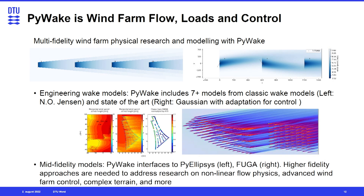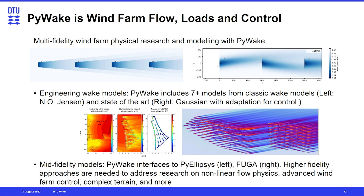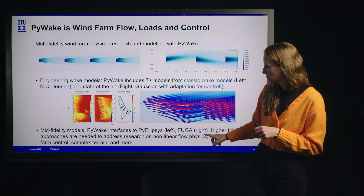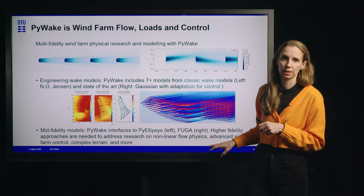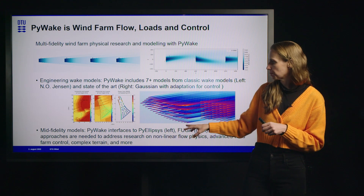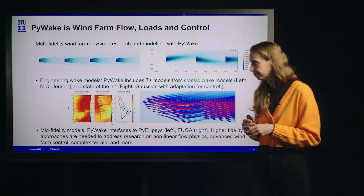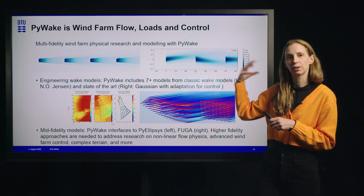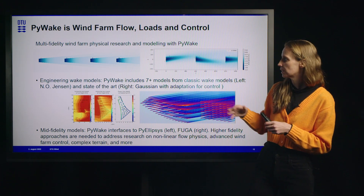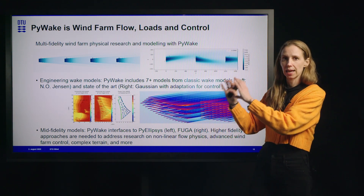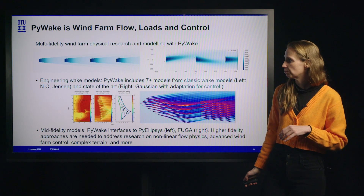We can use very simple or more sophisticated models. Pi ellipsis and Fuga are two more sophisticated models that we can interface to from Piwake. These are much more computationally intensive but capture more advanced flow physics — nonlinear flow physics, wind farm control, complex terrain, and other features that simple models have trouble with. We use these energy production models to calculate energy for a specific layout, feeding into the AEP within our LCOE equation.